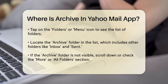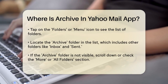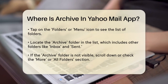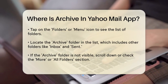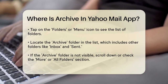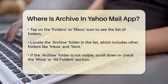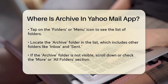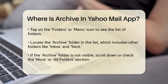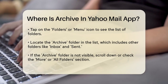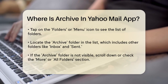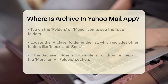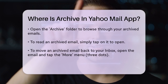Once you're in the menu, you'll see a list of folders, including Inbox, Sent, Drafts, and Archive. Tap on the Archive folder to open it. This is where all your archived emails are stored. If you can't find the Archive folder directly, you might need to scroll down the list of folders or look under a More or All Folders section.